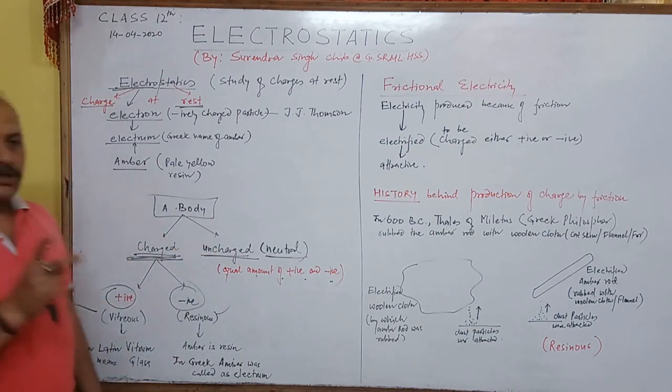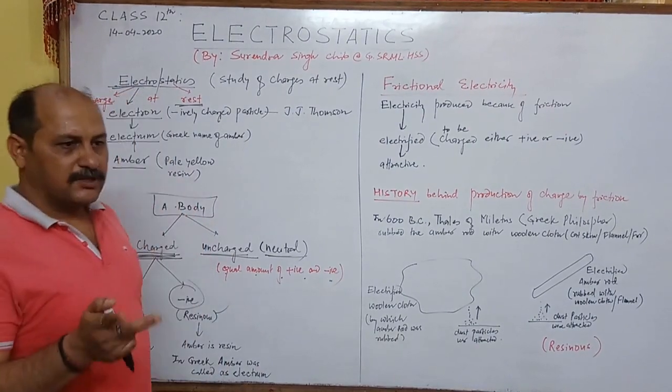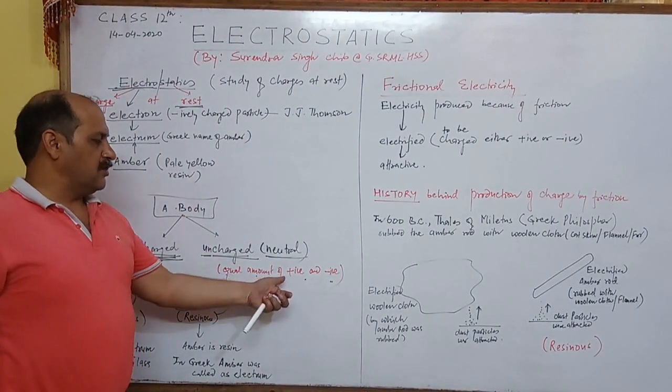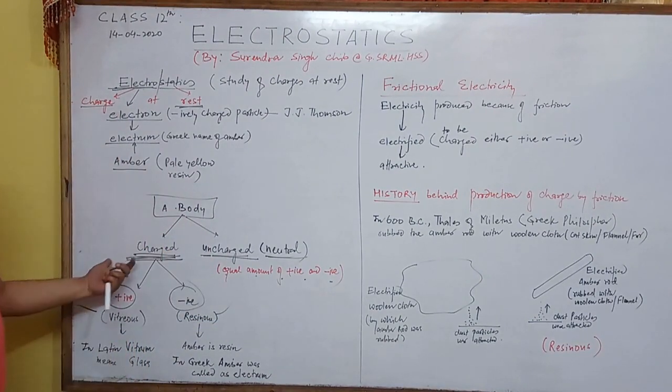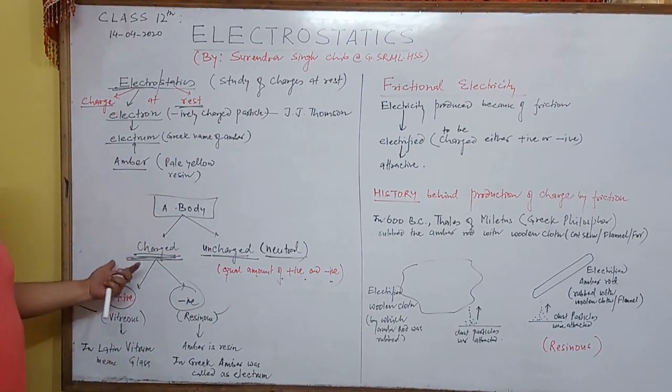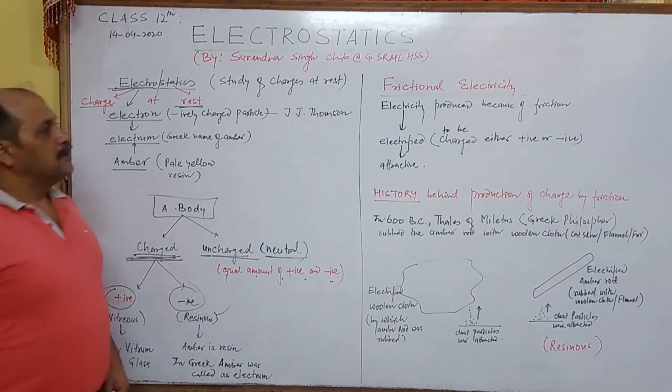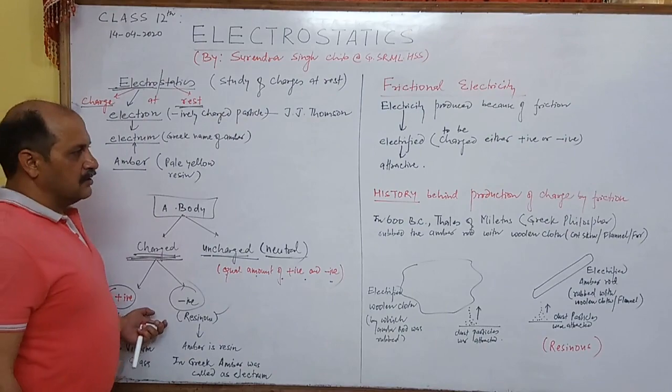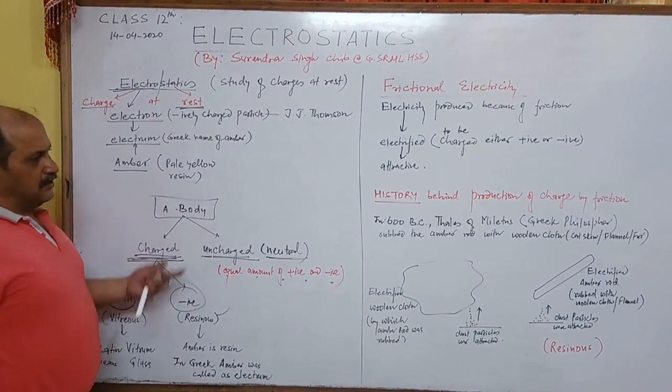But what is it? Bodies of two types, whether it is Charged or Uncharged. Uncharged means it has both equal number of positive and negative charges. Charged means it has the property to attract small bits of neutral bodies or dust particles. I will explain it in the next lesson.